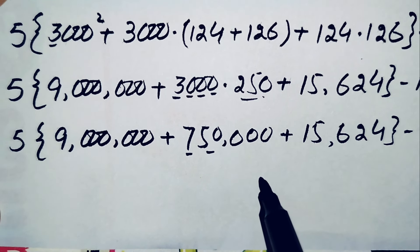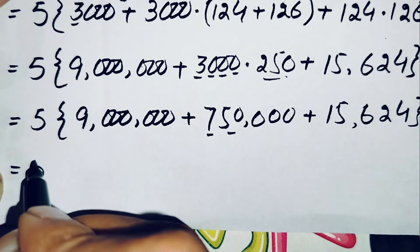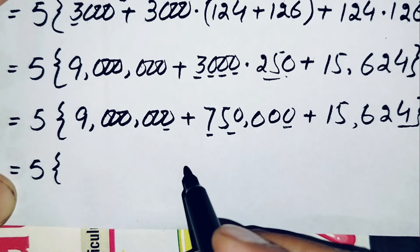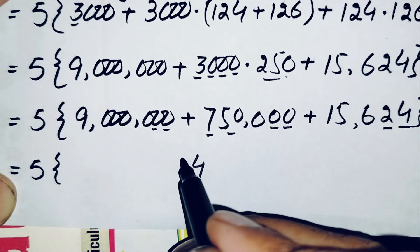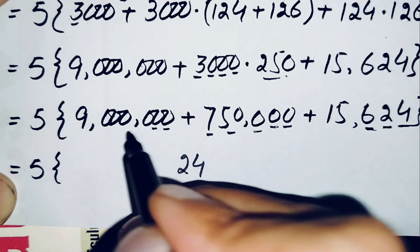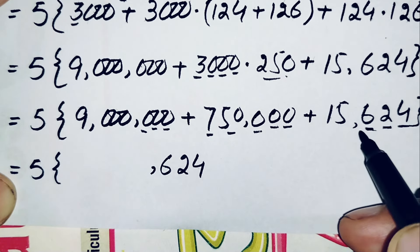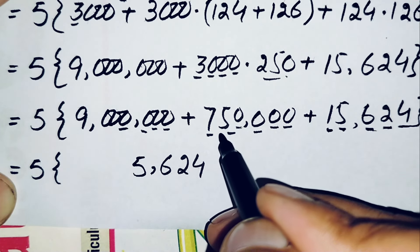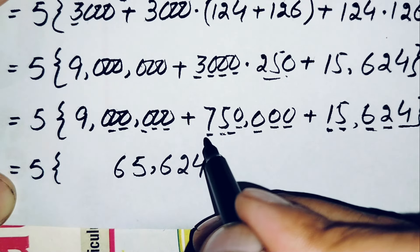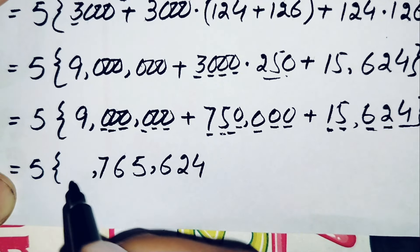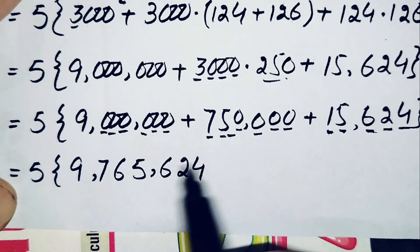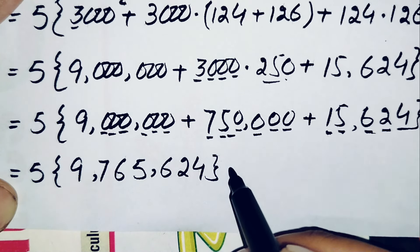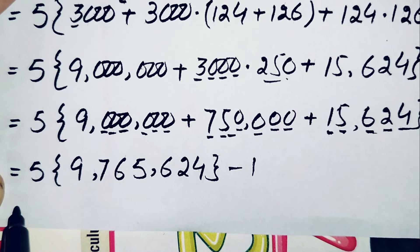Adding the three numbers inside the braces: 4 plus 0 plus 0 is 4; 2 plus 0 plus 0 is 2; 6 plus 0 plus 0 is 6; 5 plus 0 is 5; 5 plus 0 is 5; 1 plus 5 is 6; 7 plus 0 is 7; then 9. So the sum is 9,765,624, minus 1.